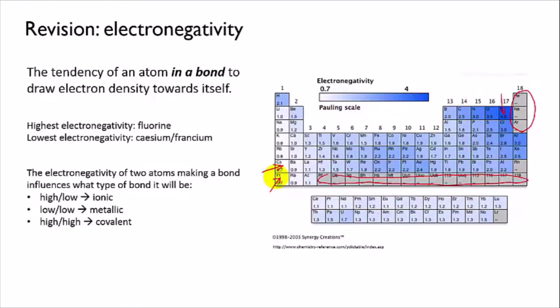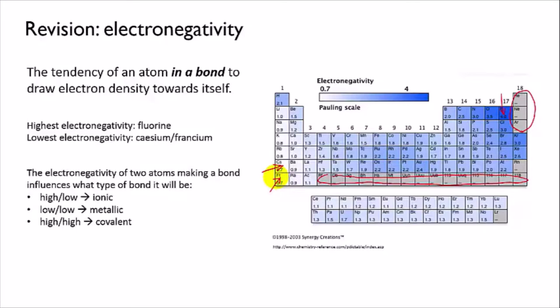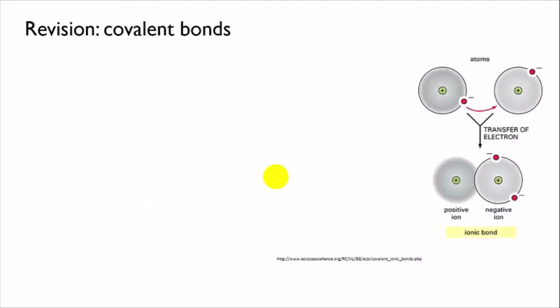You may also remember that when two atoms get together, it's their electronegativities that influence what kind of bond they'll form. For instance, if a pair of atoms with widely differing electronegativities meet, they'll form an ionic bond.